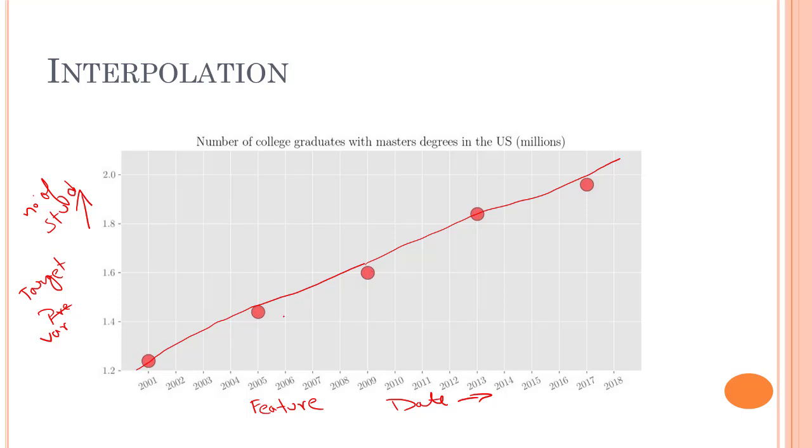Now, the use for this straight line might be for interpolation. If I have to predict what was the number of students in 2003 at this point, I can say that the number of students that passed out in 2003 are nearby 1.35 million.